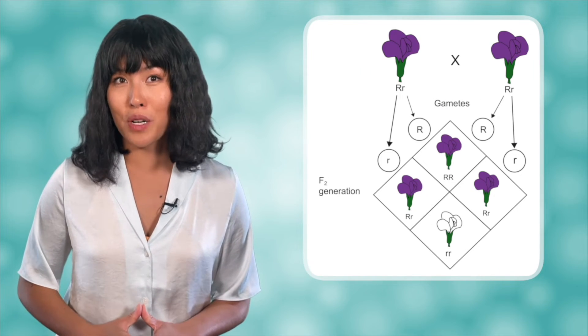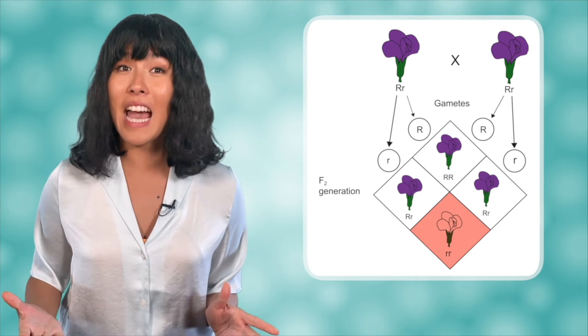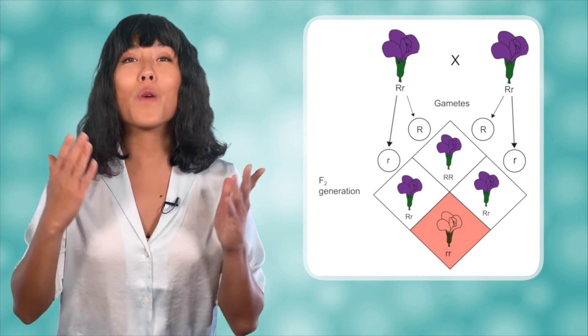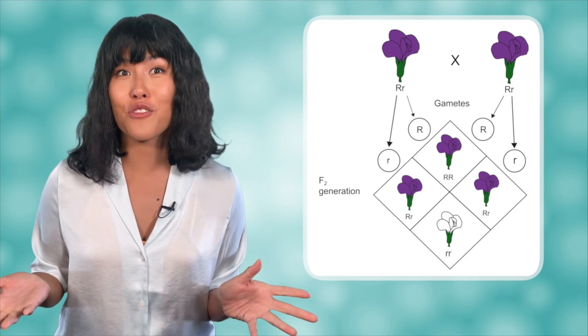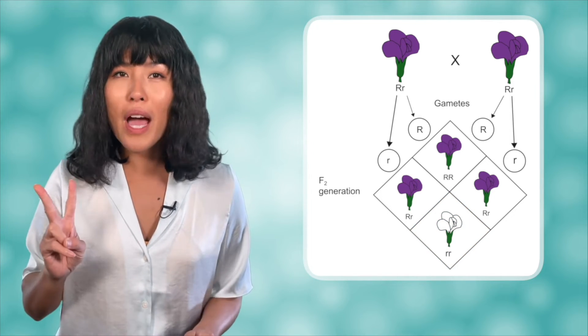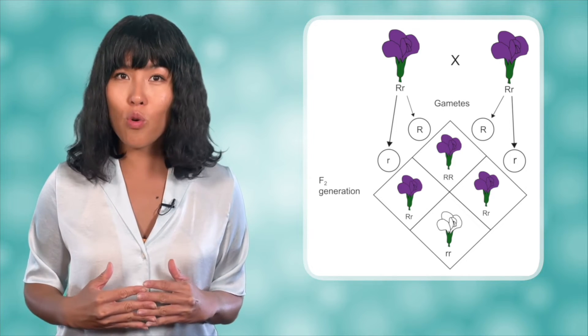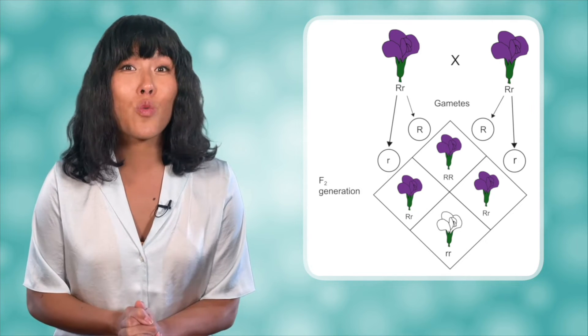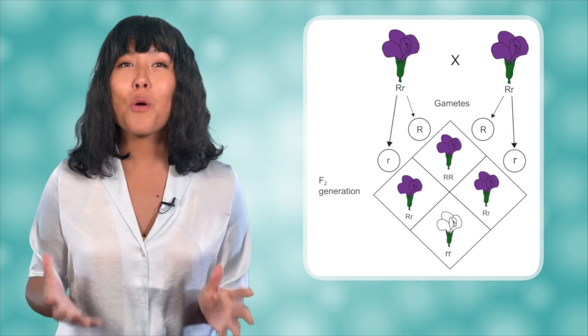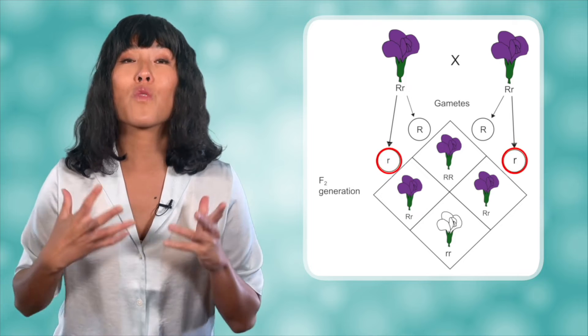The 25% or one-fourth recessive phenotype that we have found may sound familiar. Last time, when we looked at the results of Mendel's pea plant experiment, we found that 25% of the F2 generation always had the recessive trait, even though neither of the parents had the recessive trait. Anytime two heterozygous parents are crossed, they will produce an organism with the recessive trait about one-fourth of the time, because there is a 25% chance that both parents will give the offspring a recessive allele.